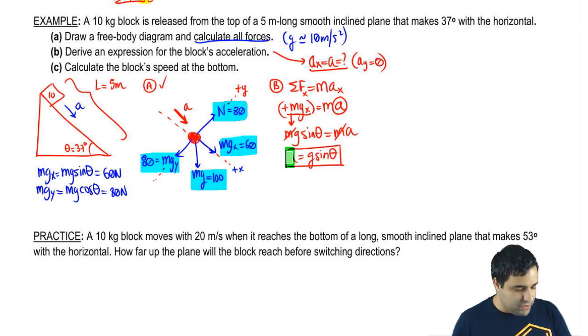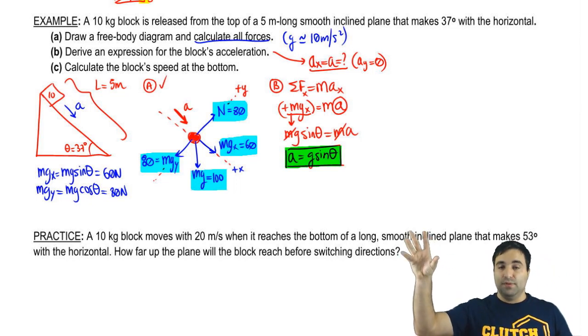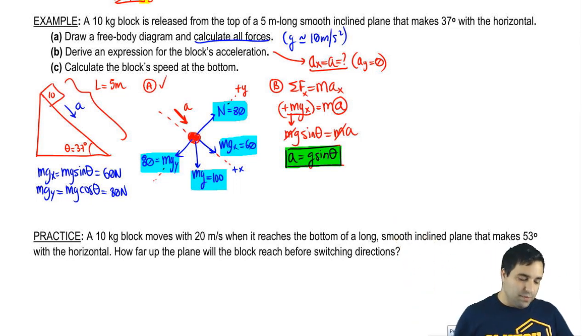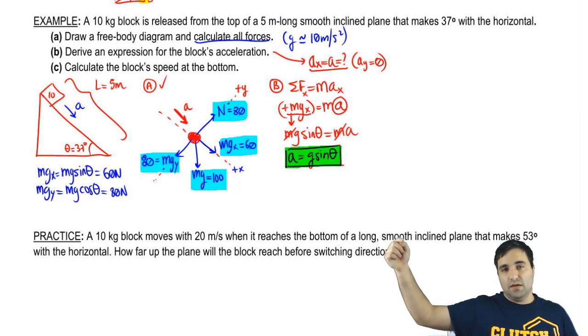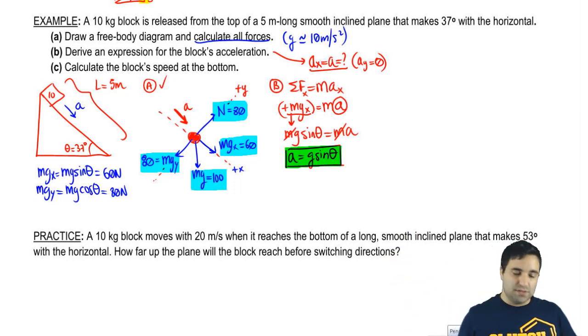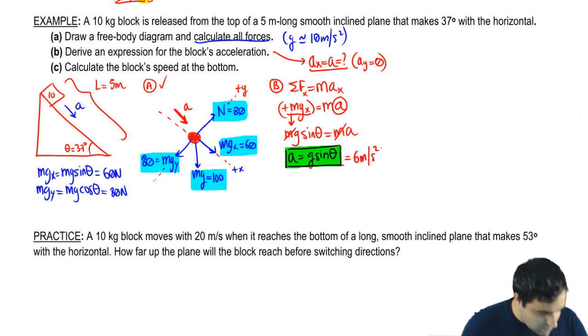A is g sine of theta right there. And this is a little equation that's probably worth remembering for your test. Every time you have an object going down an inclined plane that has no friction, the acceleration will be g sine of theta. If you're going down the plane, it's positive g sine of theta. If you're going up the plane, gravity is pulling you back down so it's going to be negative. So let's calculate that. G sine of theta is going to be 6 meters per second squared.